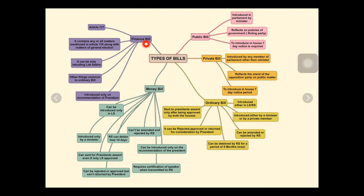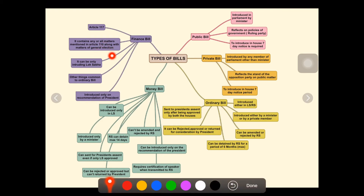The fifth and final type is the finance bill. It deals with Article 117 and contains any or all matters mentioned in Article 110, along with matters of general legislation. It can only be introduced in Lok Sabha. The other features are common to the ordinary bill. It can also be introduced only on the recommendation of the President.